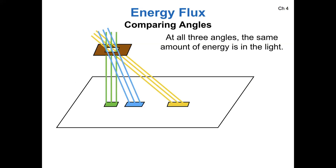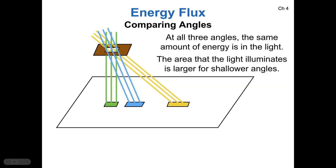If I look at all these three situations at the same time, the same amount of energy is going through each of these through the aperture every time. But the energy flux is lowest when the area is largest at the shallow angle.